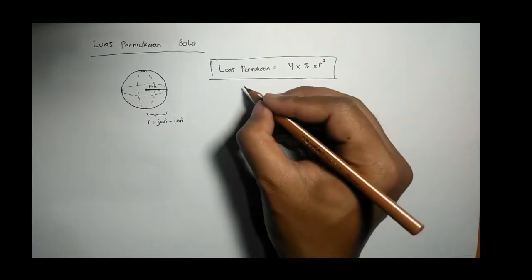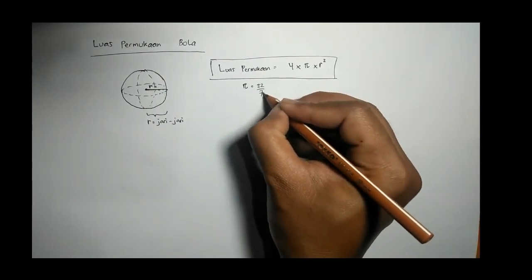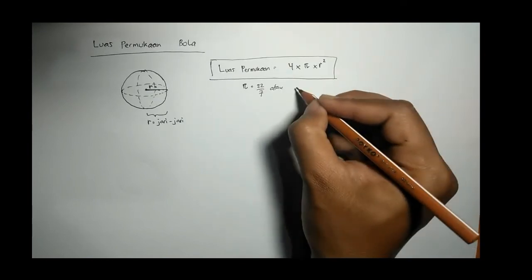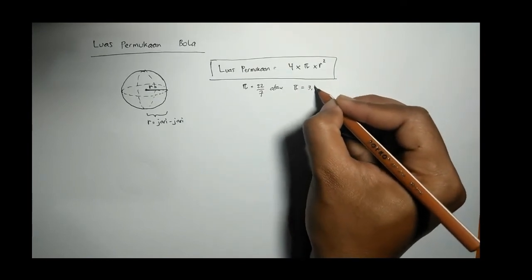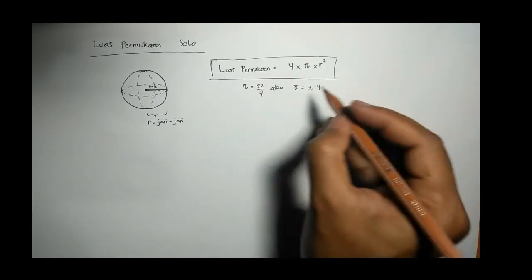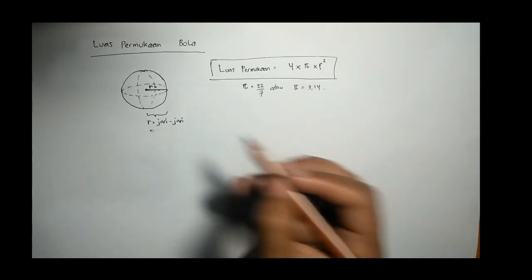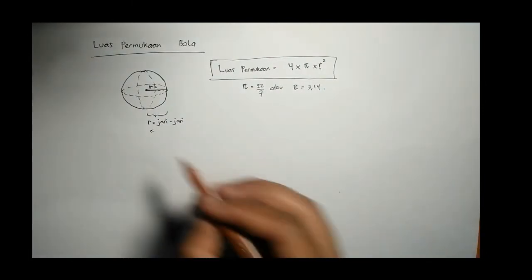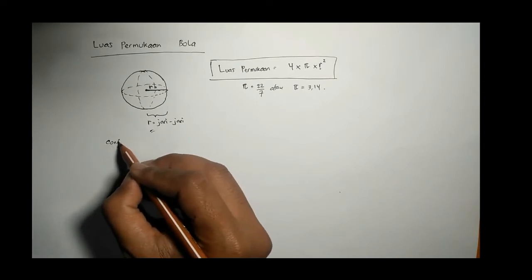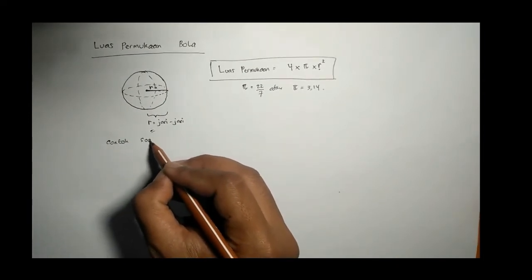4 dikali π R kuadrat. Ingat-ingat ya, ini adalah luas permukaan bangun ruang bola, 4 kali dari π R kuadrat atau 4 kali dari luas seperti luas lingkaran ya, π R kuadrat. π nya sama, 22/7 jika kelipatan 7 atau 3,14 jika bukan kelipatan 7.